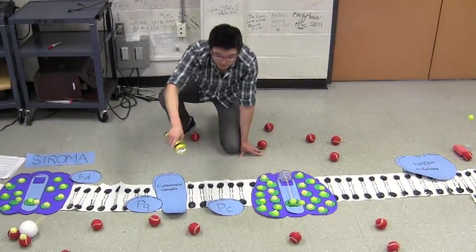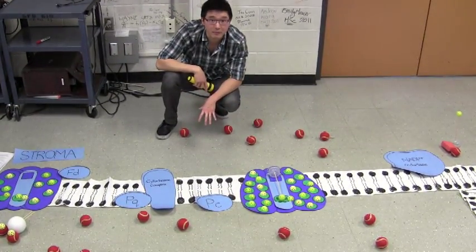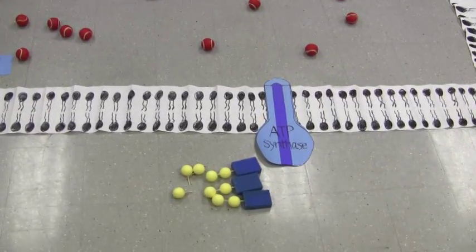From here, the hydrogen ion gradient, which you see, we now have more hydrogen ions inside and less outside of the thylakoid membrane. That hydrogen ion gradient can then be used to make ATP as you saw in video one.